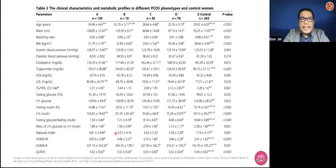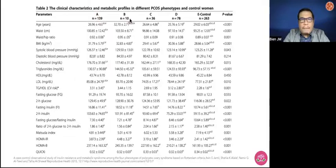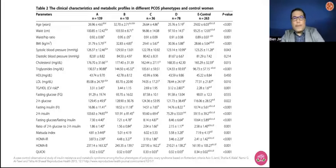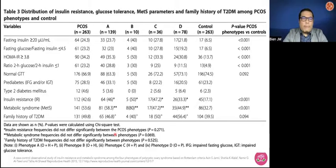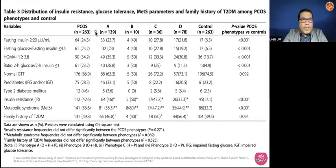In the same analysis, they looked at the clinical characteristics and metabolic profile of the different PCOS phenotypes versus control women. As said earlier, you have phenotypes A, B, C, and D. Phenotypes A, B, and some C — those phenotypes with hyperandrogenism — are the ones with characteristic insulin resistance pattern compared to phenotype D. This is the distribution of insulin resistance, glucose tolerance, metabolic syndrome parameters, and family history of type 2 diabetes among PCOS phenotypes and control.